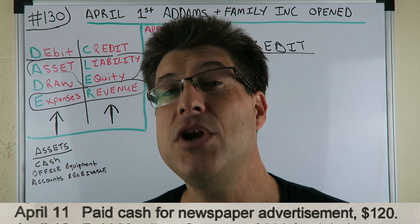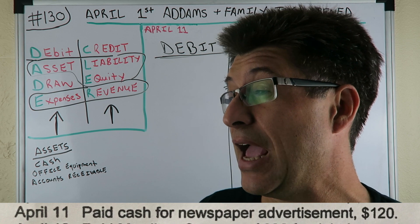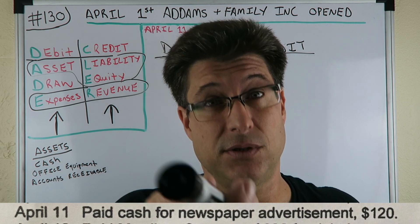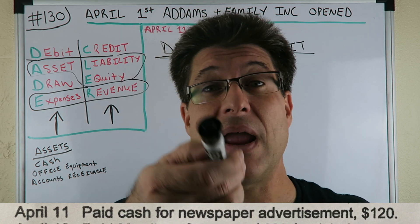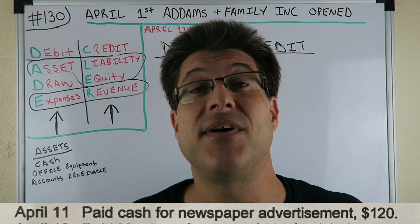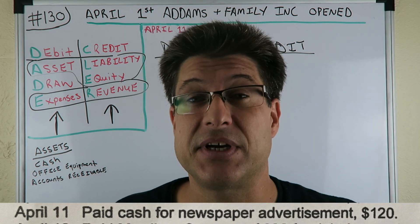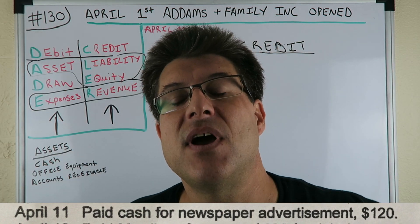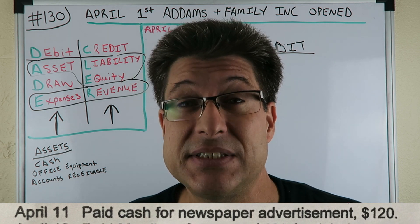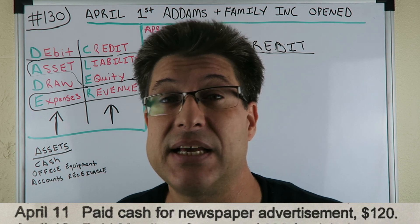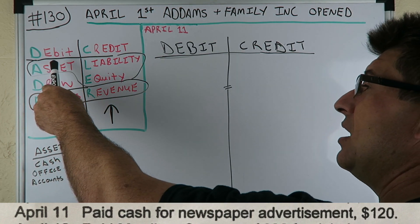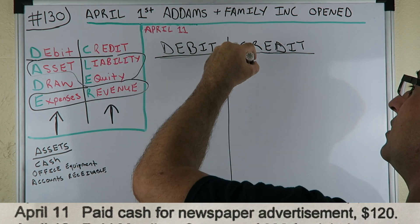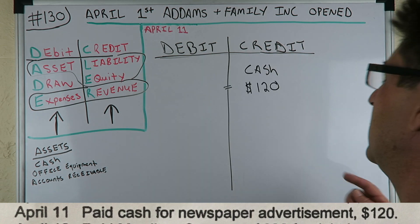Paid cash — we know cash is an asset. If you pay cash, I'm paying you cash and getting the advertisement in return. So as a business, is our cash increasing or decreasing? I'm paying you cash, so our cash is decreasing. Decreasing cash is an asset, so we have a decreasing asset. If an asset is increasing, we debit it; if an asset is decreasing, we credit it. So we have cash as our credit of $120.